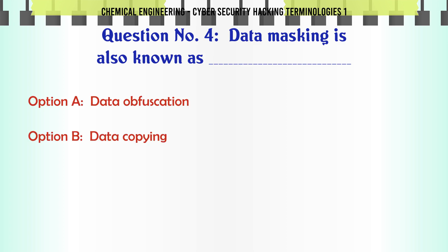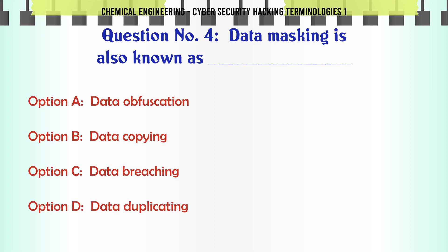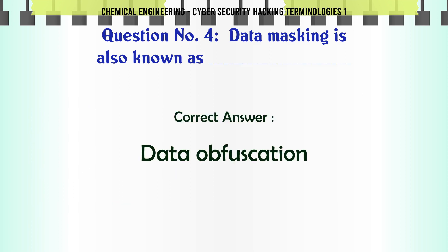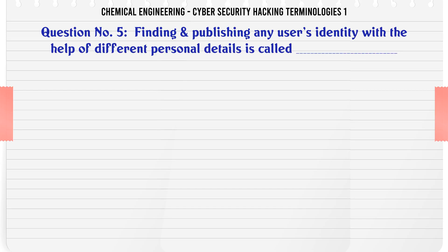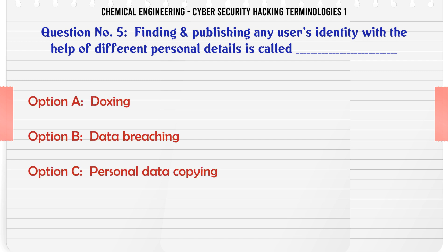Data Masking is also known as A. Data Obfuscation B. Data Copying C. Data Breaching D. Data Duplicating. The correct answer is Data Obfuscation.